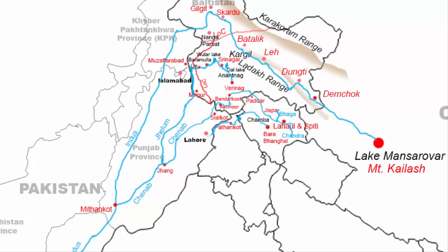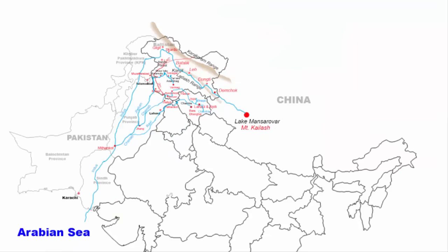The Ravi River then enters the city of Lahore. From Lahore, the river flows south-west for about 280 to 300 km and joins the river Chenab. In about 250 to 300 km, the river Chenab joins the Indus River at Mithankot, and the Indus River continues and drains into the Arabian Sea.